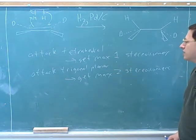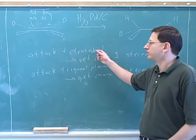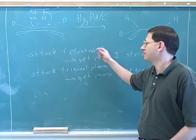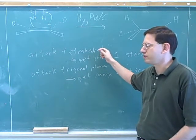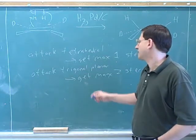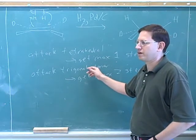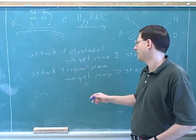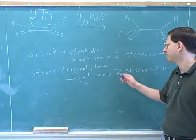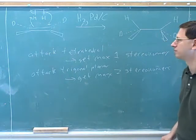In E2, the alpha carbon is tetrahedral, and you only get one of the cis and trans isomers. You use the antiperiplanar transition state to decide whether it's cis or trans. But in E1, you're attacking a trigonal planar carbocation alpha carbon, and again you get two stereoisomers — a mix of cis and trans. So this explains the reactions we've seen so far.